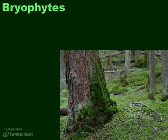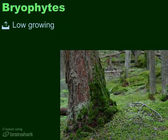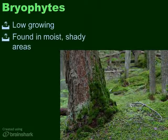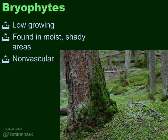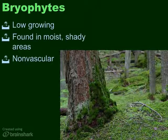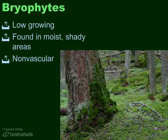Most people don't notice bryophytes around them, but if you stop and take some time to look a bit more carefully, you'll discover that they are quite common. Bryophytes are low-growing, usually found in damp, shady places, and they are non-vascular. That means they do not have vascular tissue — they don't have xylem and phloem. That also means they must acquire water and nutrients through the process of osmosis and diffusion, so they have to have a constant source of water.